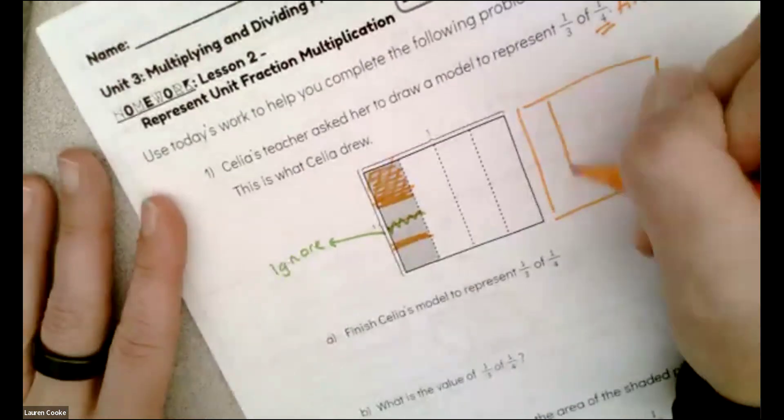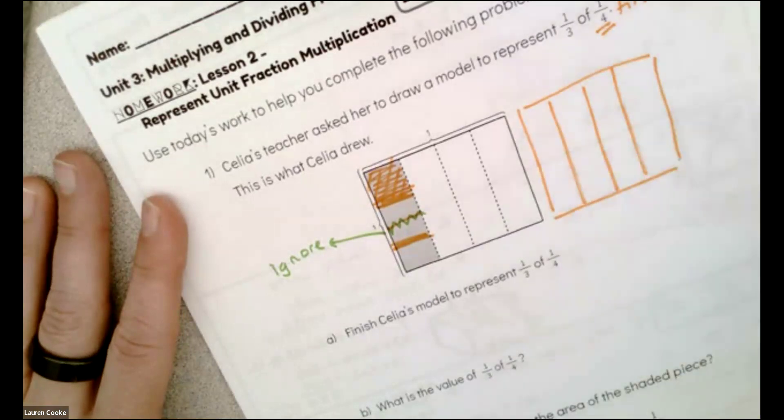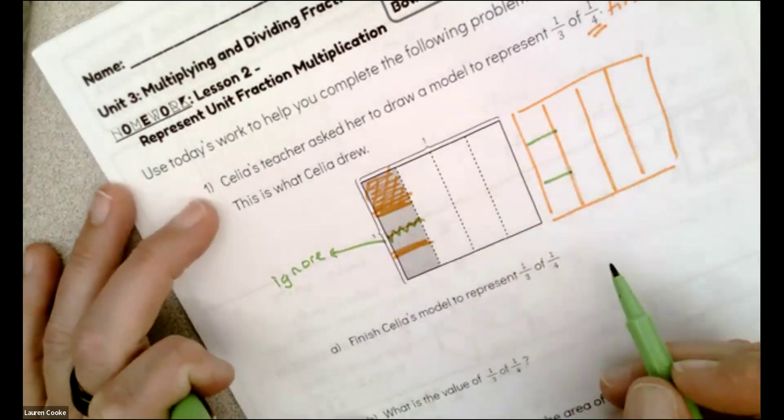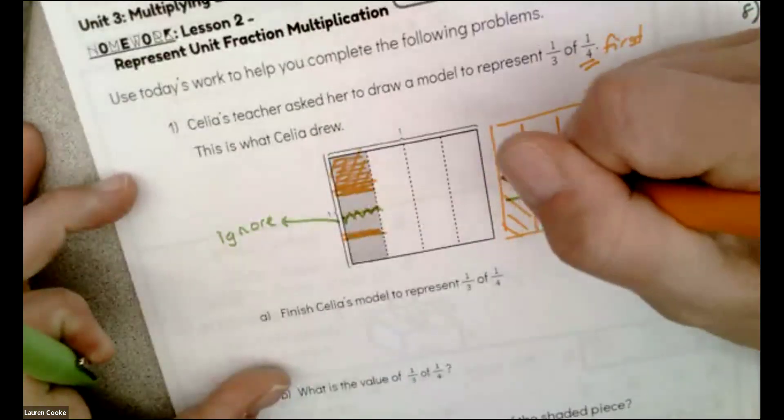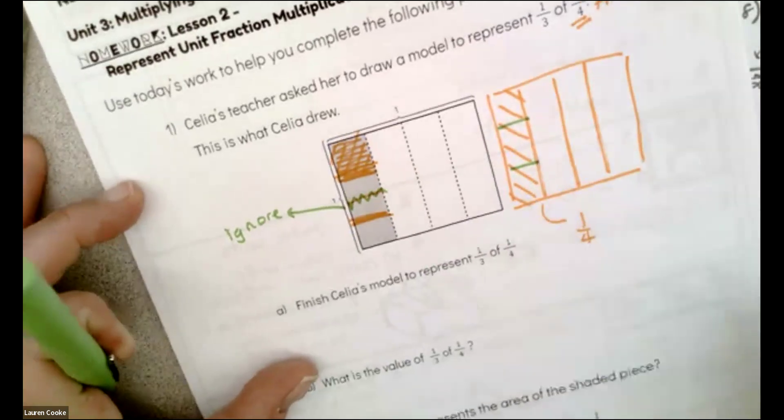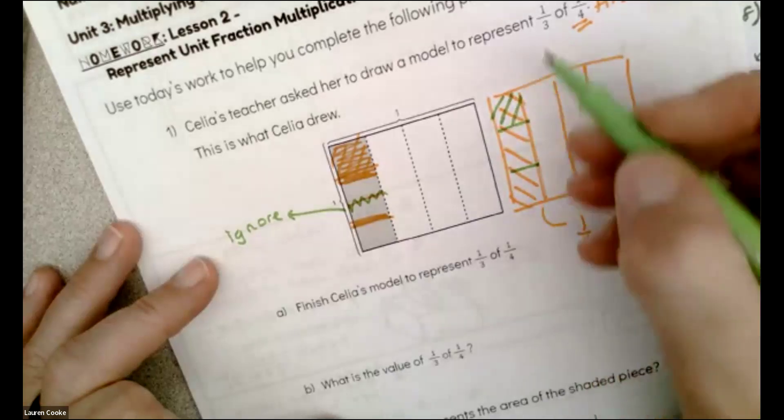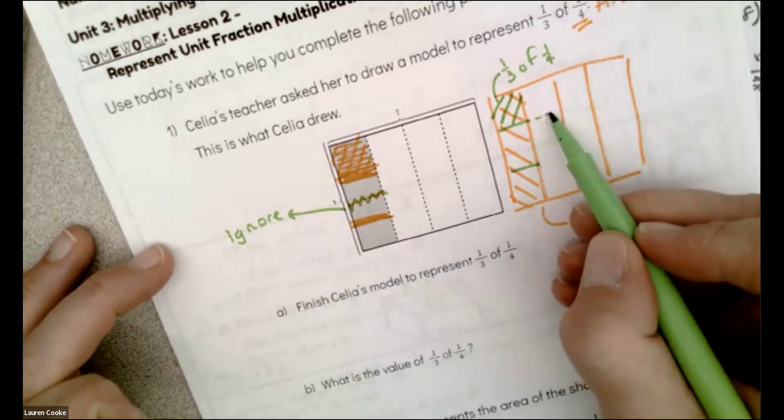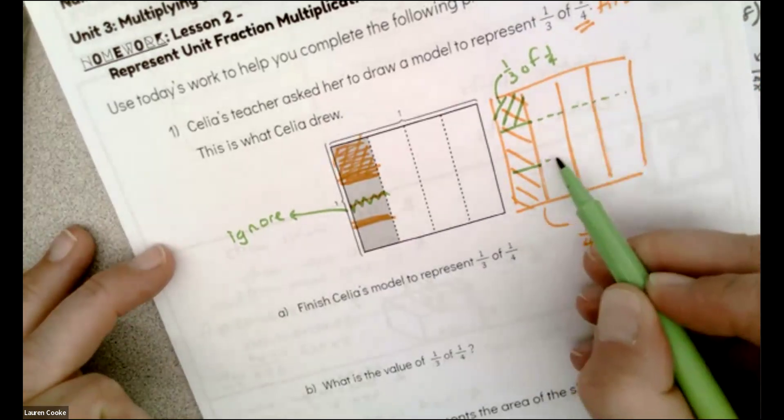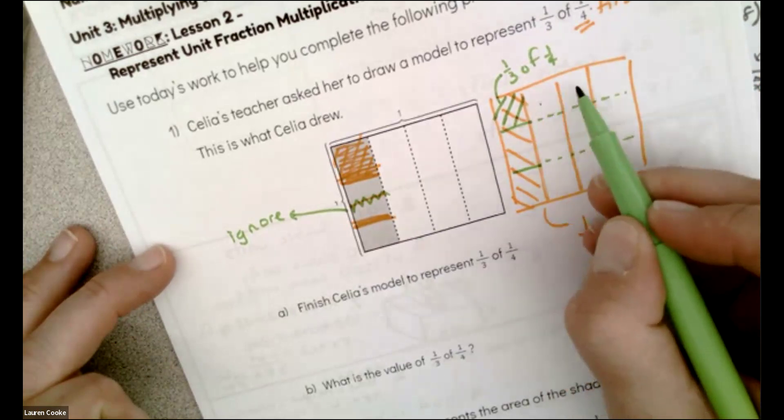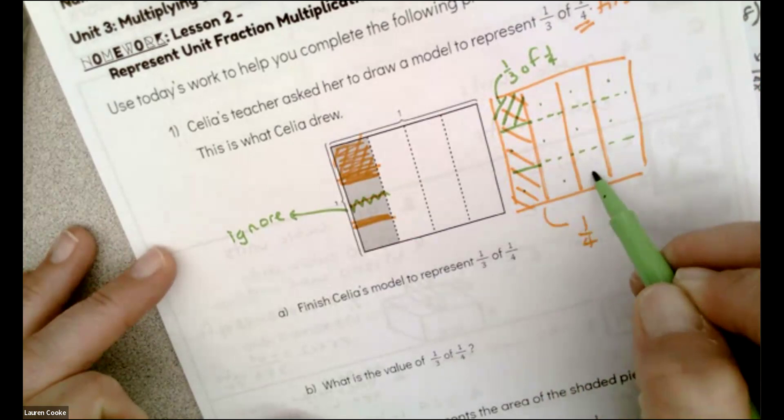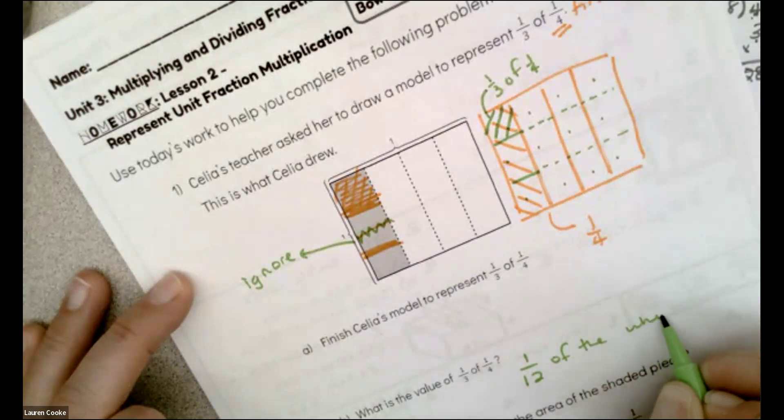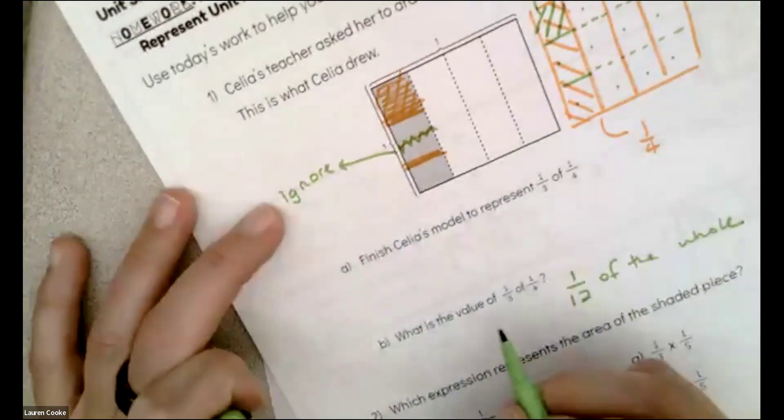Now I've shaded one-third of the one-fourth, so I'll just draw it again so we can be on the same page. One, two, three, and then one, two. So first I'm going to shade in my one-fourth, and then I'm taking a third of one-fourth. And this is a third of one-fourth. And so that shape is actually one-twelfth of the whole.